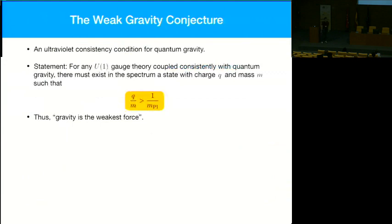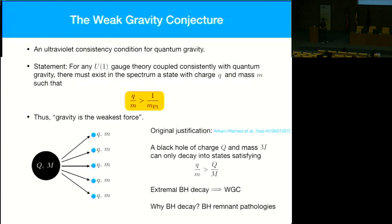We heard from Matt about the various different forms of the tower and sub-lattice weak gravity conjectures, but for the purposes of this talk I'll just be considering the weak form electric of the weak gravity conjecture, where we require the existence of some state with charge-to-mass ratio bigger than one in Planck units for any abelian gauge theory consistently coupled to quantum gravity. That one is the one associated with q/m equals one for an extremal black hole.